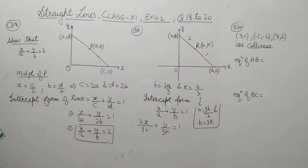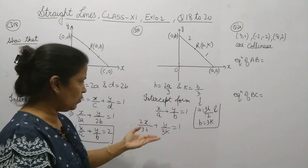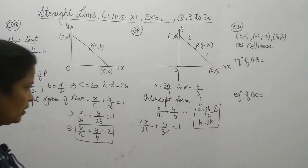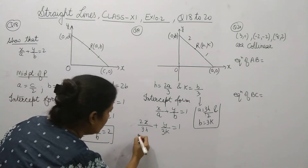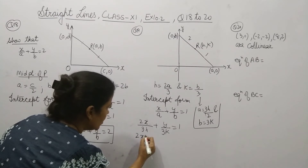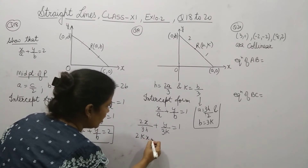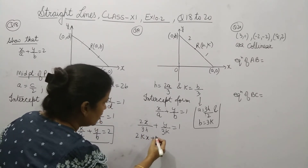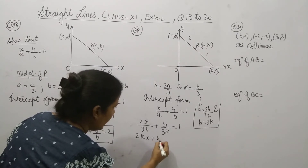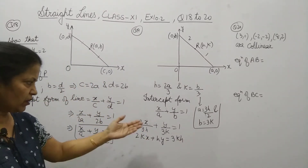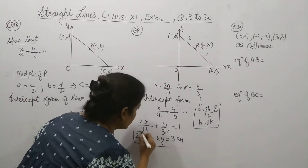Now the question asks you to convert it into an equation. So cross-multiply and simplify: it will be 2kx plus hy equals 3kh. By cross-multiplying and solving, you will get this as the equation of the line.